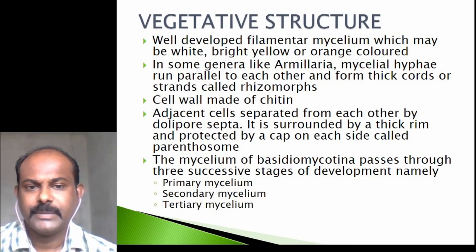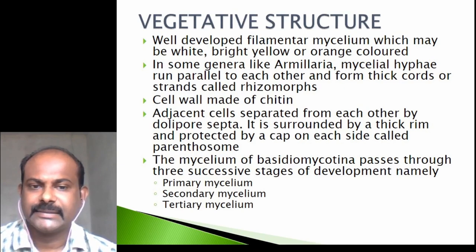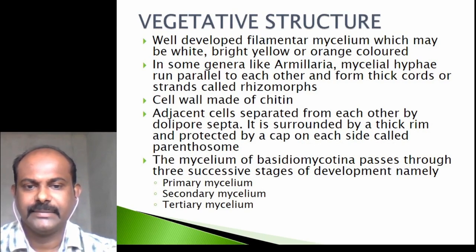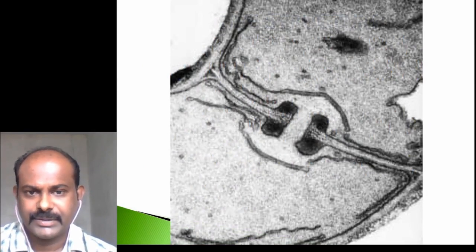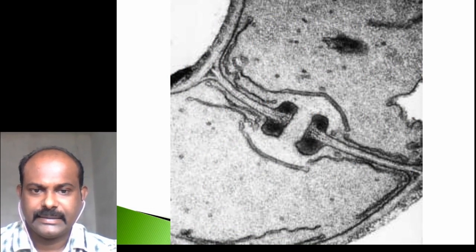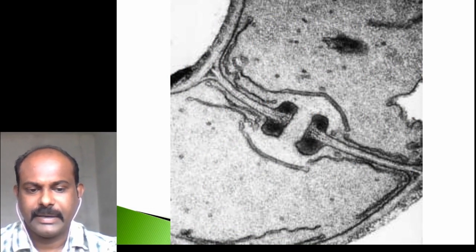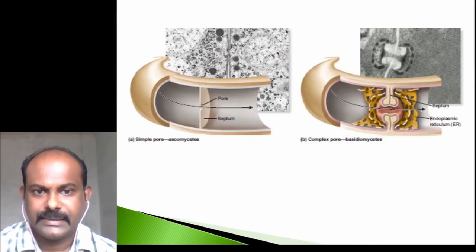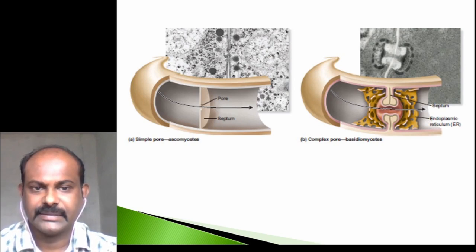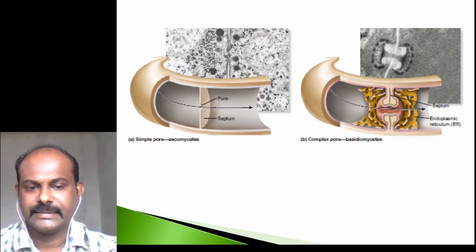The dolipore septum is special because it is surrounded by a thick rim and protected by a cap on either side called as parenthesomes. The mycelium of Basidiomycotina passes through three successive stages of development: primary mycelium, secondary mycelium, and tertiary mycelium. This figure shows the dolipore septum, and there is also a comparison between the simple septum of ascomycetes and the complex dolipore septum of basidiomycetes.